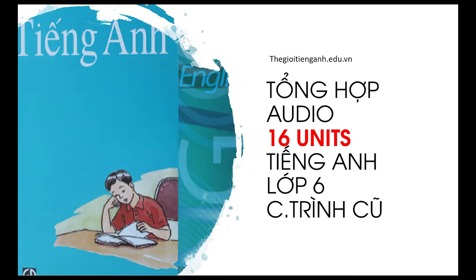Listen and check. Complete this table in your exercise book. Min lives in an apartment in the city. Dun lives in a house in a town. Nga lives in a house in the city.